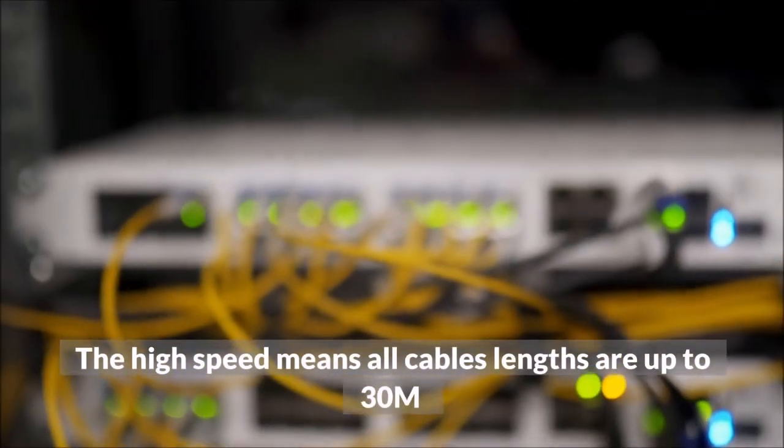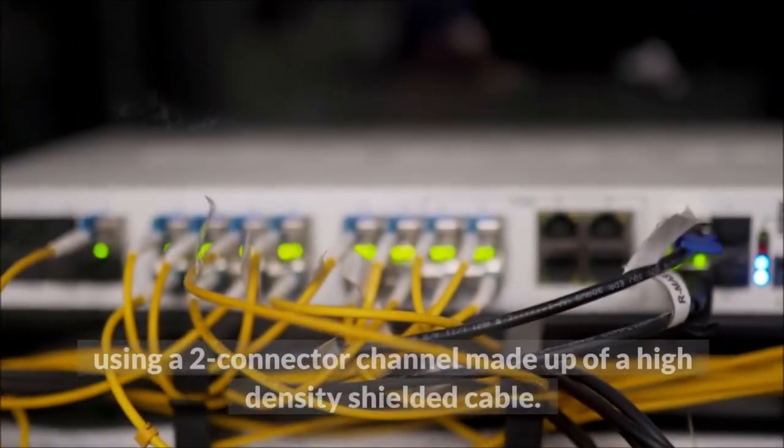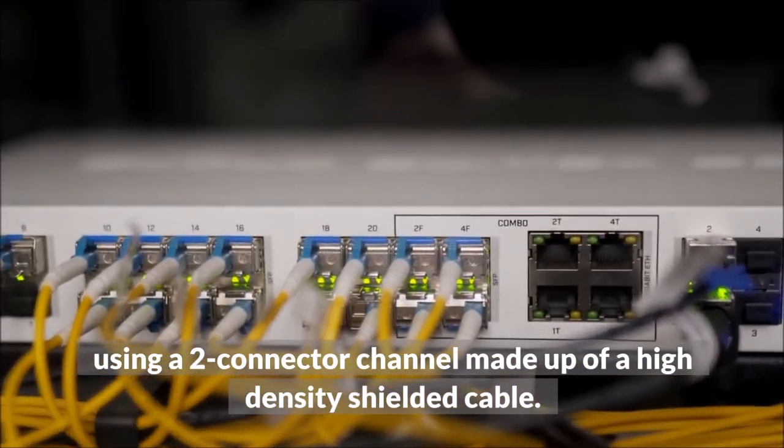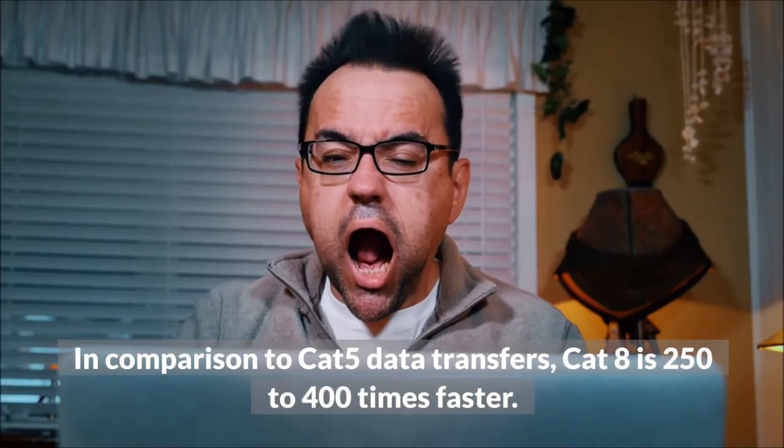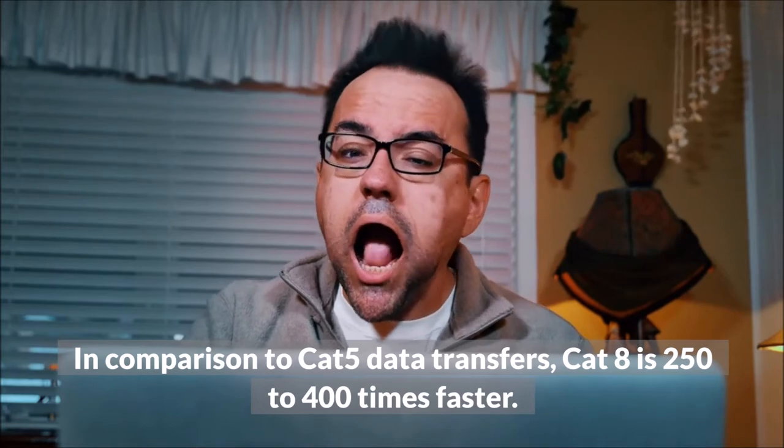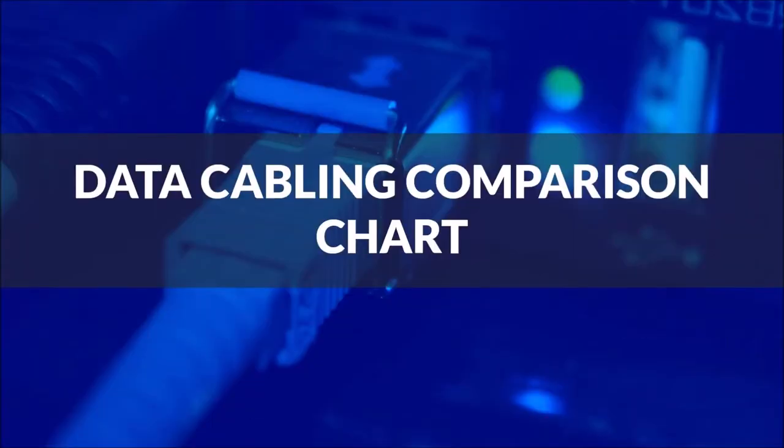The high speed means all cables' lengths are up to 30 meters using a 2 connector channel made up of a high-density shielded cable. In comparison to CAT-5 data transfers, CAT-8 is 250 to 400 times faster. Data cabling comparison chart.